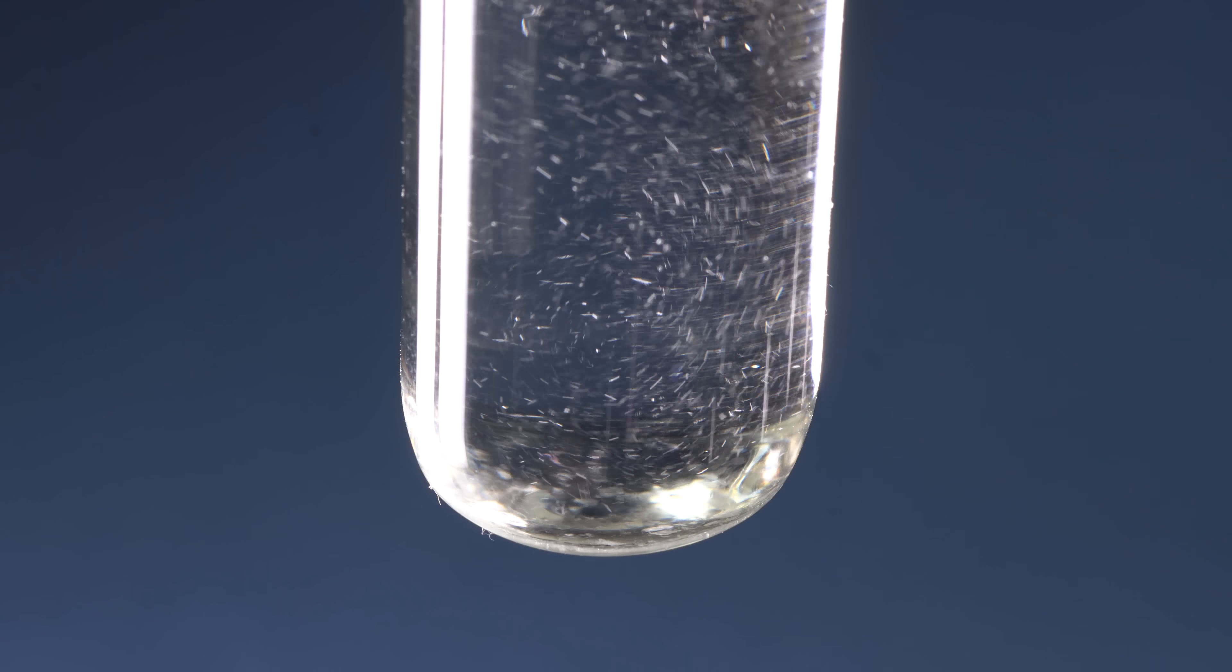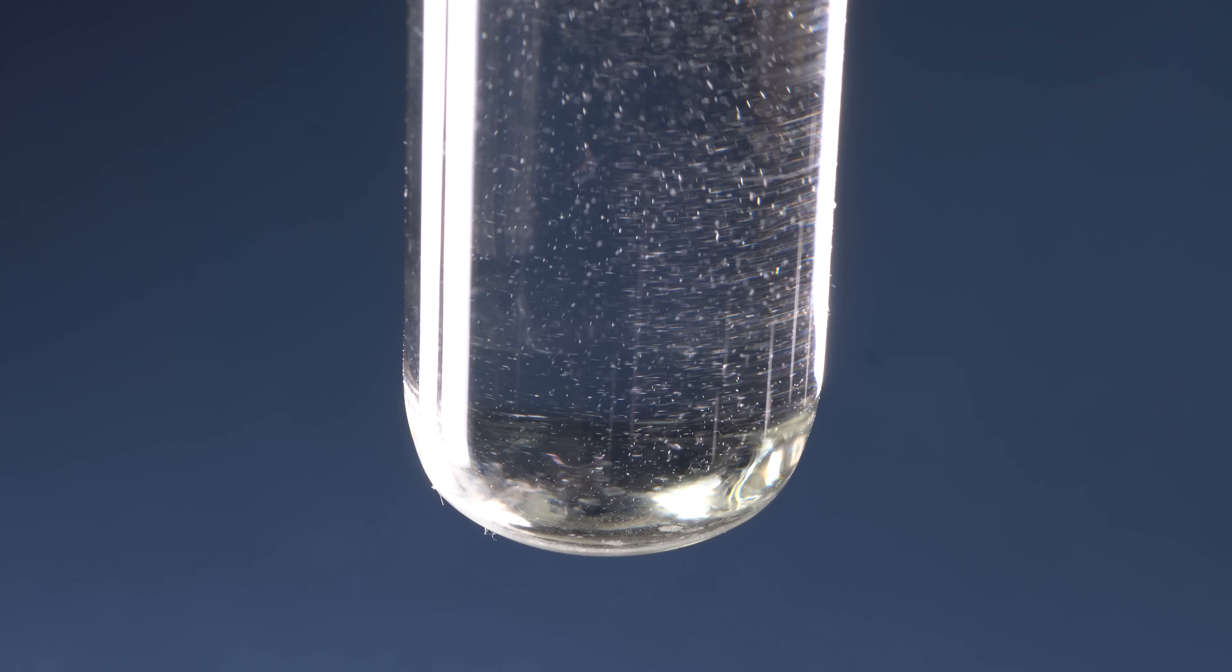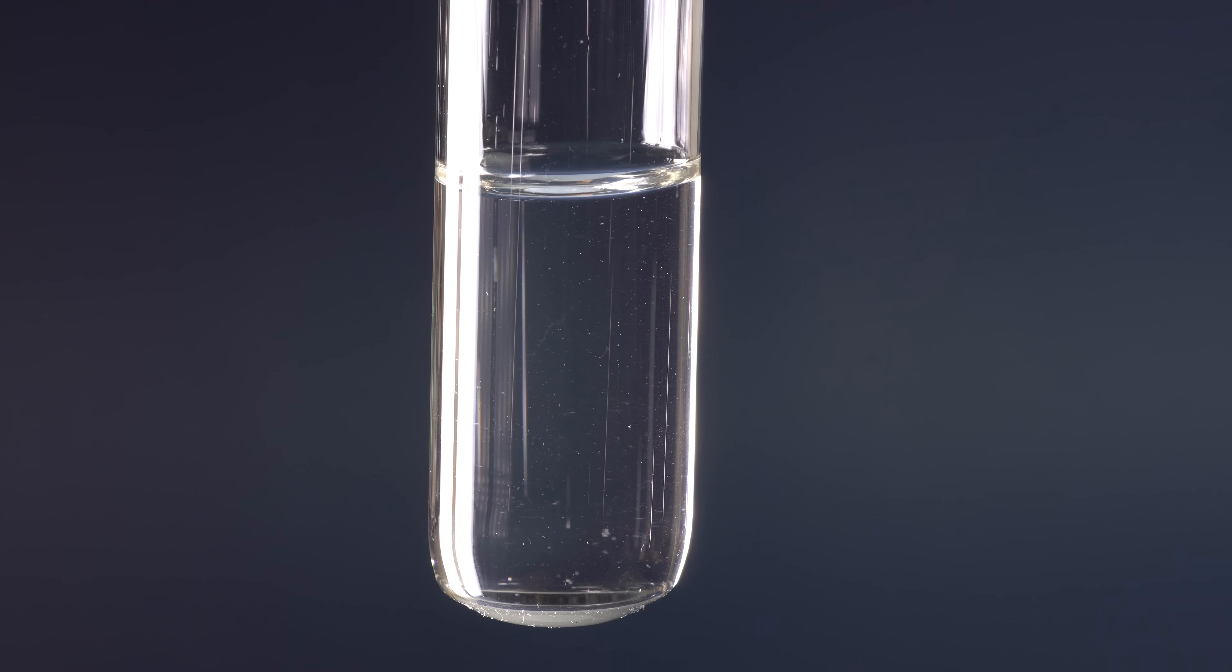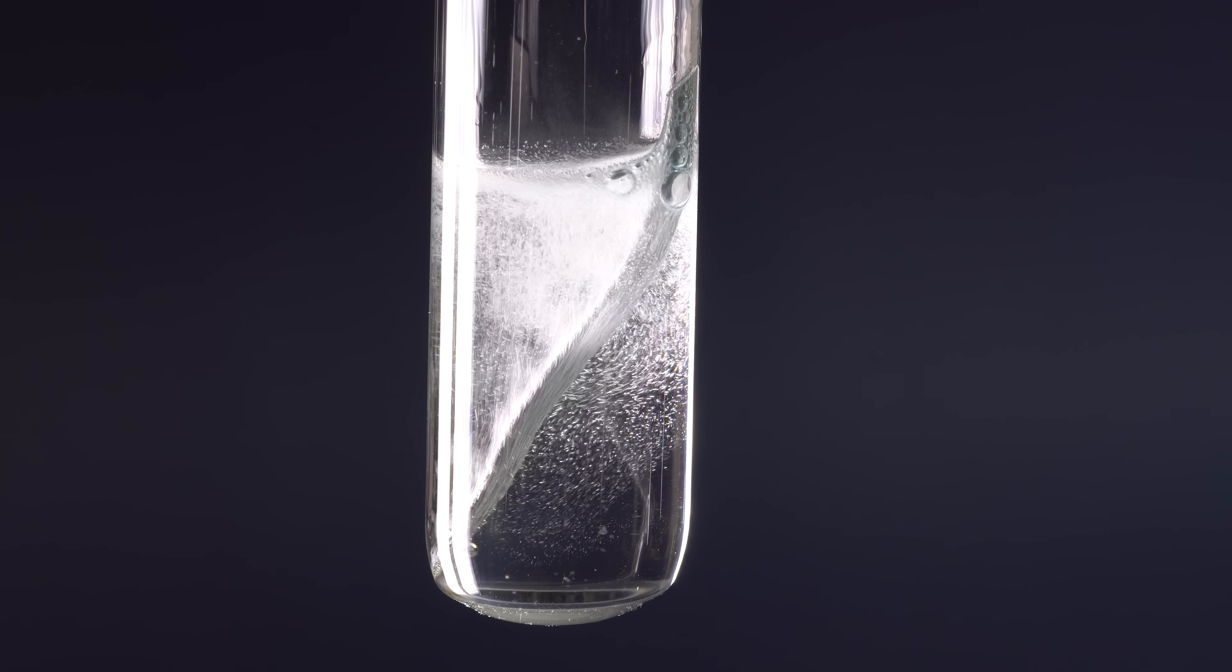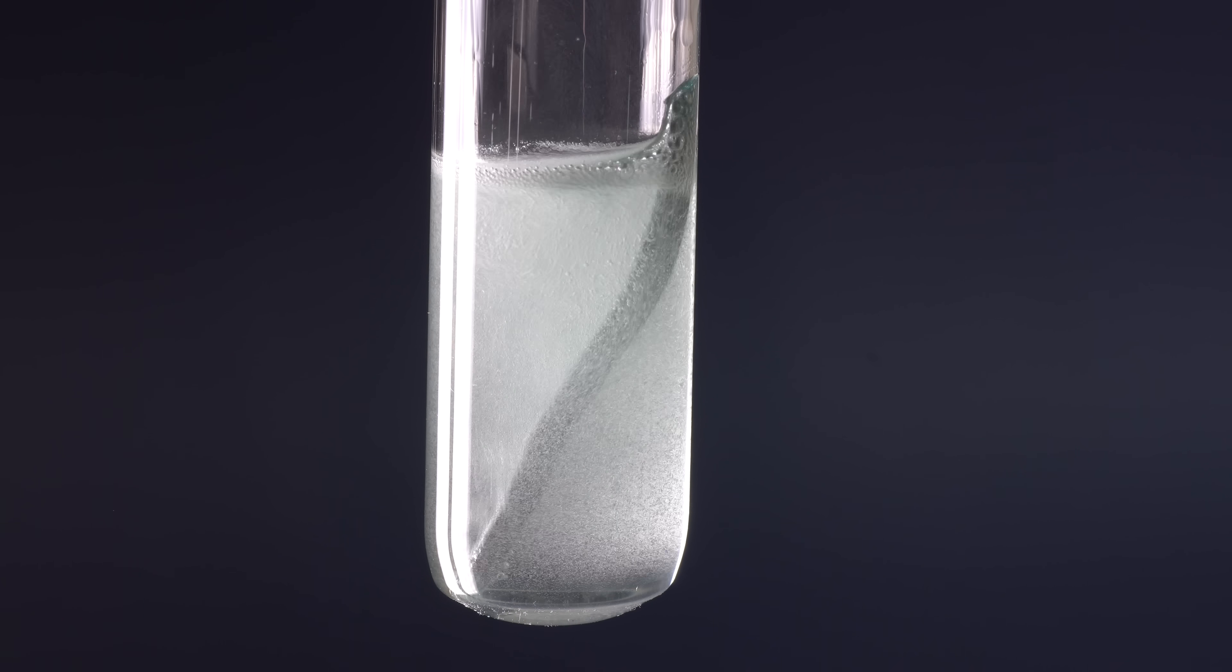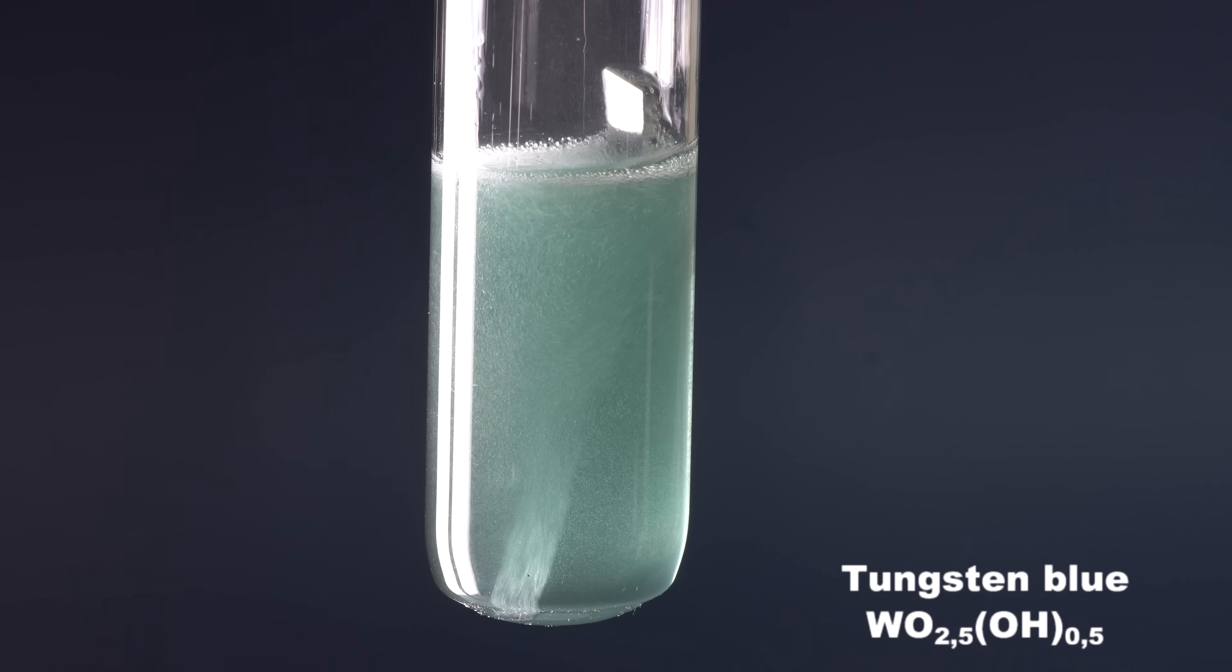But, instead of water, I'll use 30% acetic acid to obtain the so-called tungsten blue pigment, that has a very intense color. To do this, I'll add a piece of magnesium to the test tube. Magnesium reacts with acetic acid, releasing hydrogen, which in turn recovers tungsten from the hexavalent state to tungsten oxide, with an admixture of other oxides.